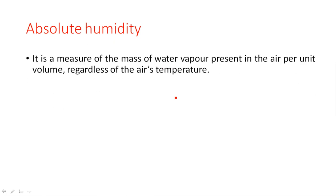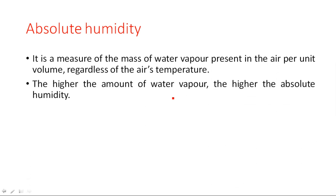Absolute humidity is a measure of the mass of water vapor present in the air per unit volume, regardless of temperature. Irrespective of the atmospheric temperature, we calculate the amount of mass of water present in the atmosphere — that is absolute humidity. The higher the amount of water vapor, the higher the absolute humidity.